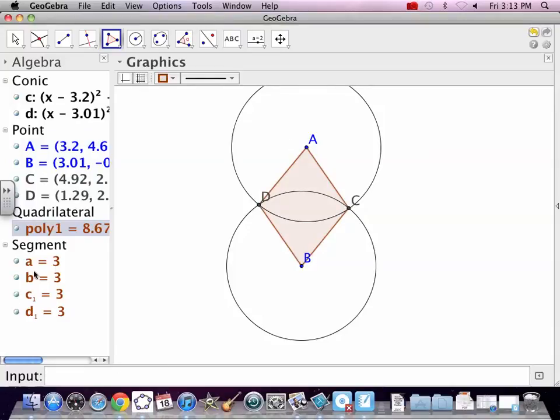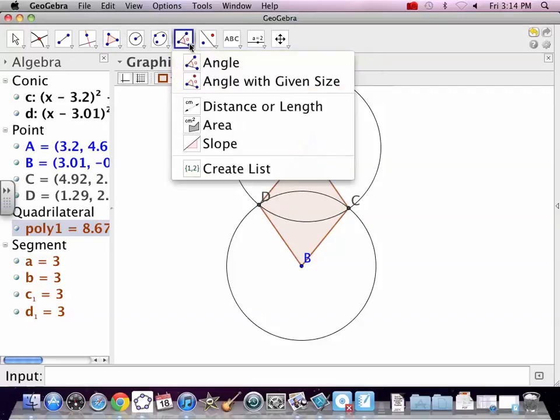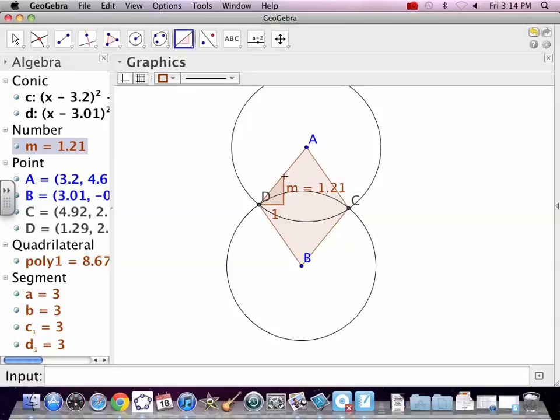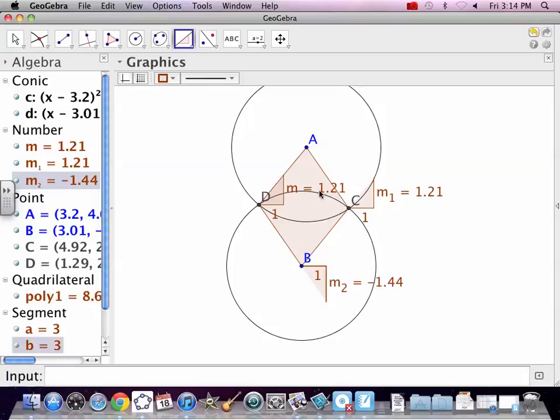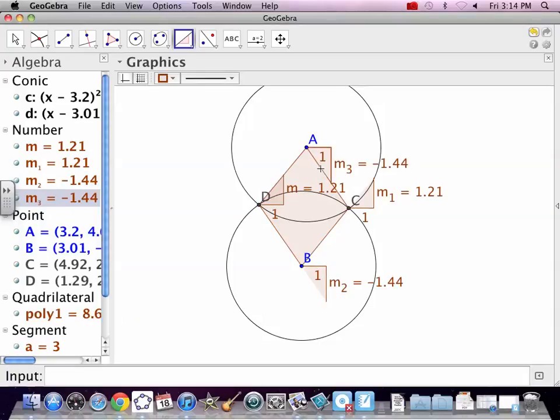The sides are all three. You want me to prove that they're parallel? I will prove they are parallel by measuring slopes. Find the slope of that. 1.21. Its twin will be 1.21. Find the slope of this one. Negative 1.44. The slope. Negative 1.44.